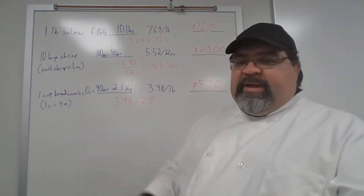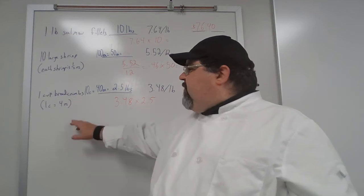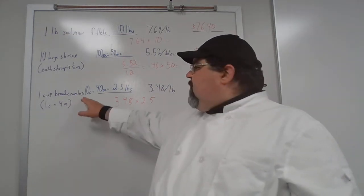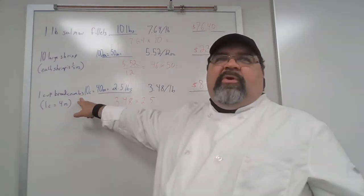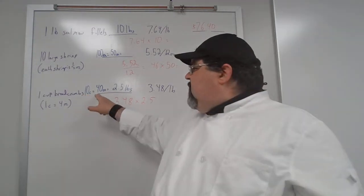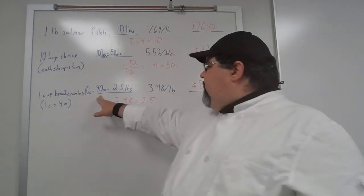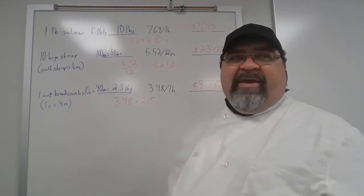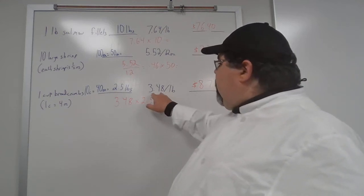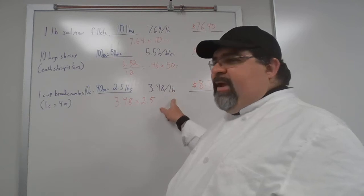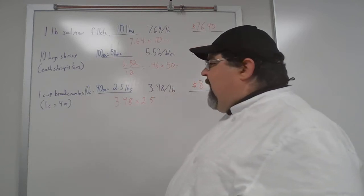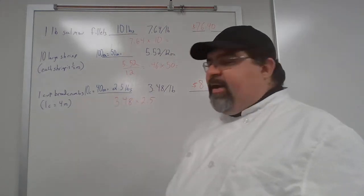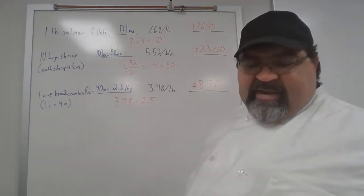To pull everything together, you need some breadcrumbs. One cup of breadcrumbs is four ounces, so multiplied by 10 you need 40 ounces of breadcrumbs — that's two and a half pounds. A one-pound bag of breadcrumbs is $3.48, so multiply $3.48 times 2.5 to get $8.70.